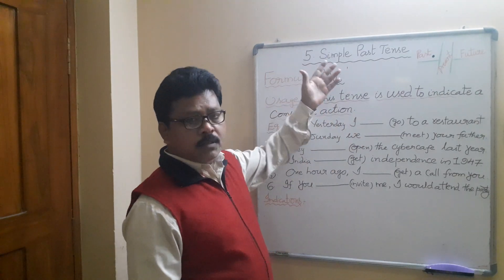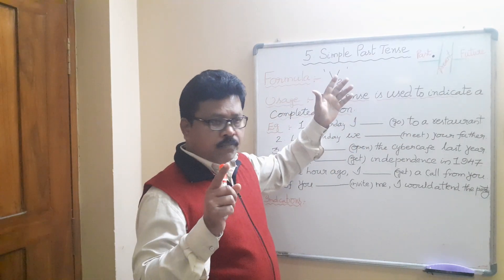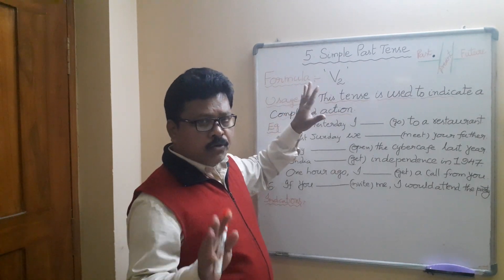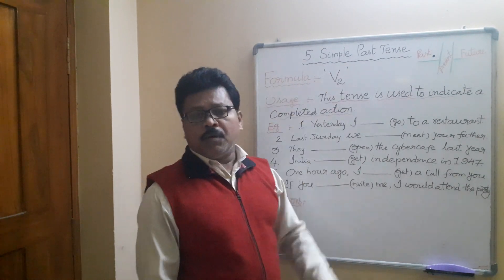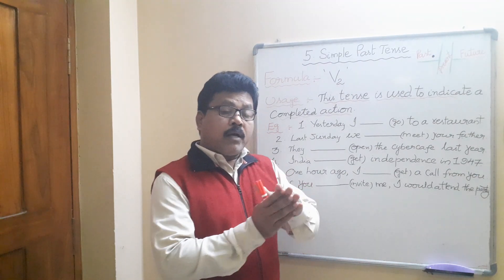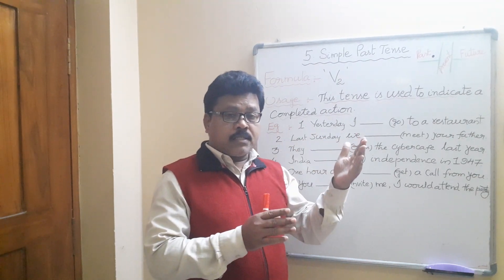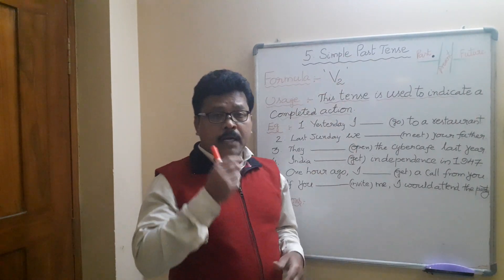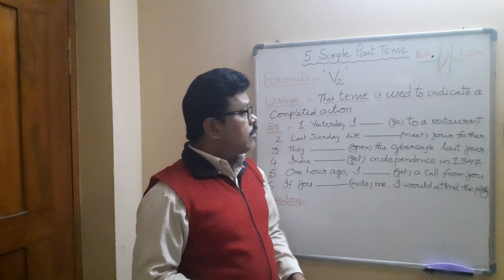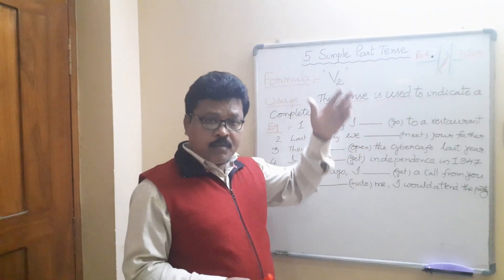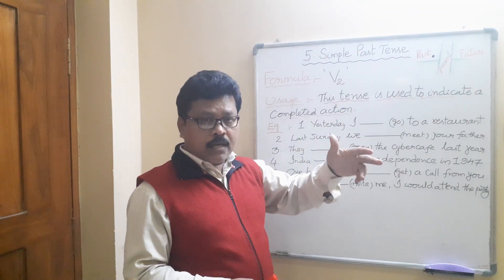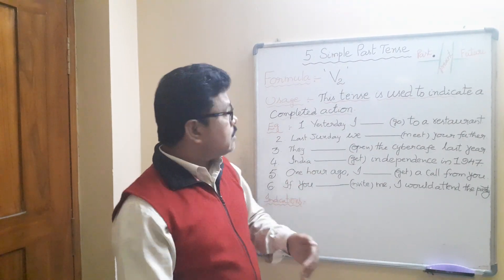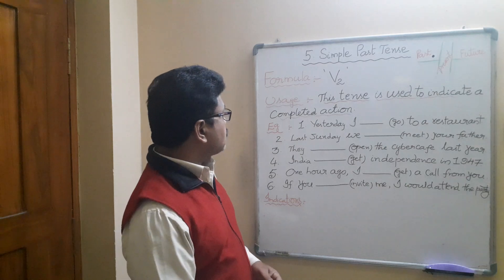This is the first form of past tense — simple past tense. Now, what is the formula? The formula for simple present tense is V1, so the formula for simple past tense is V2. For example: go → went, see → saw, take → took, teach → taught. The second form of the verb is simple past tense.